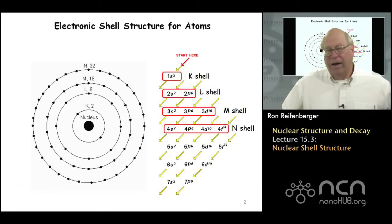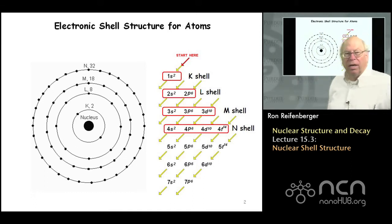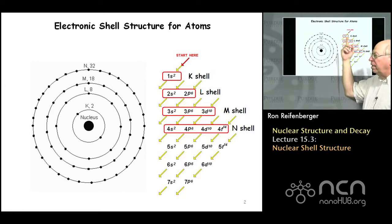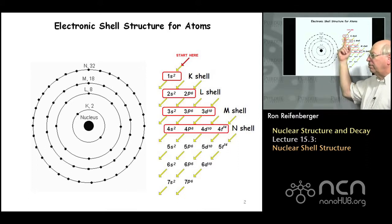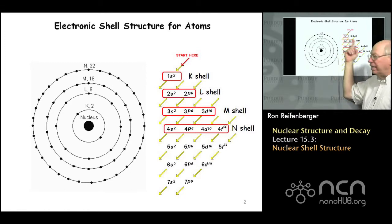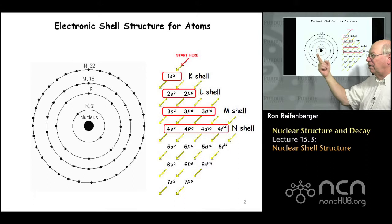By way of reminder, the electronic shell structure for atoms is based on this type of diagram. We discovered these quantum numbers N and script L, and these quantum numbers can be grouped into different shells which can hold different numbers of electrons. For instance, focusing on the principal quantum number N, the N equals one state is referred to as the K shell — a historic designation — and the K shell holds two electrons.